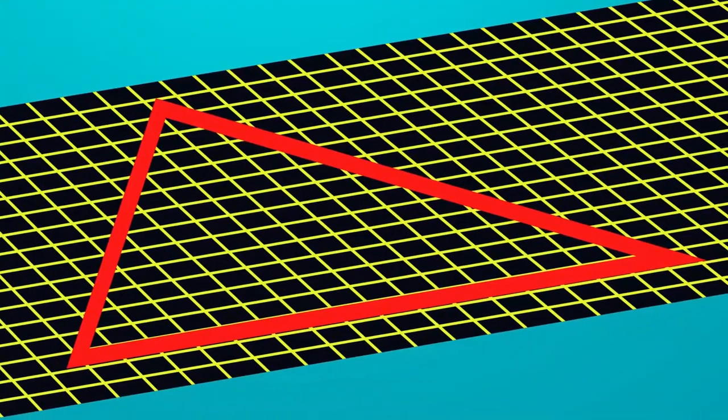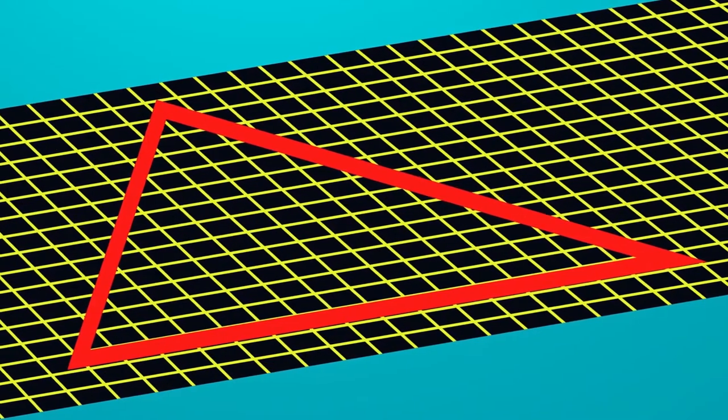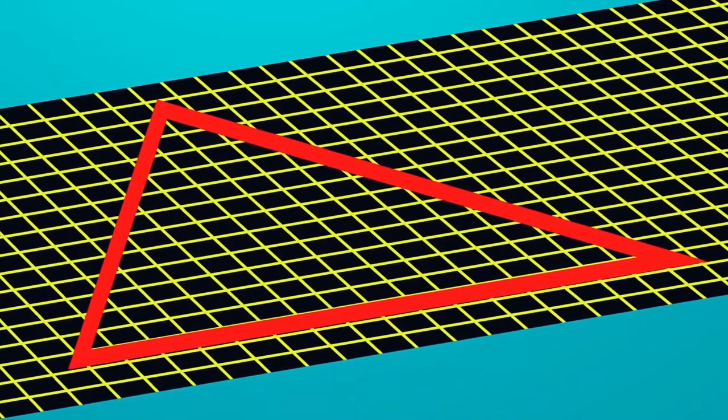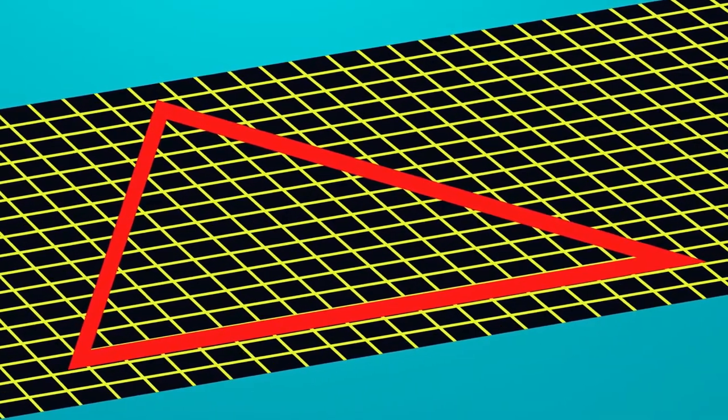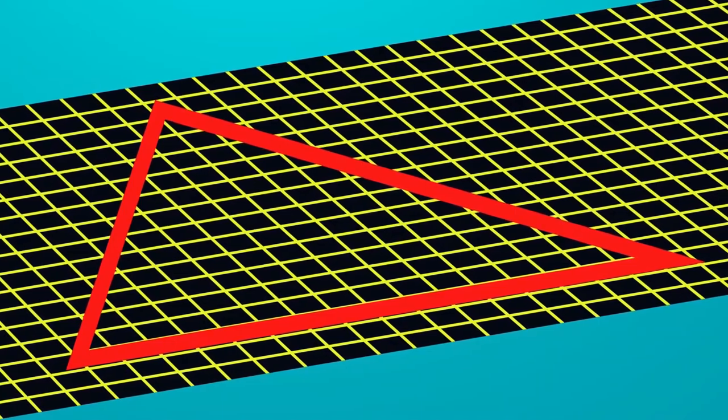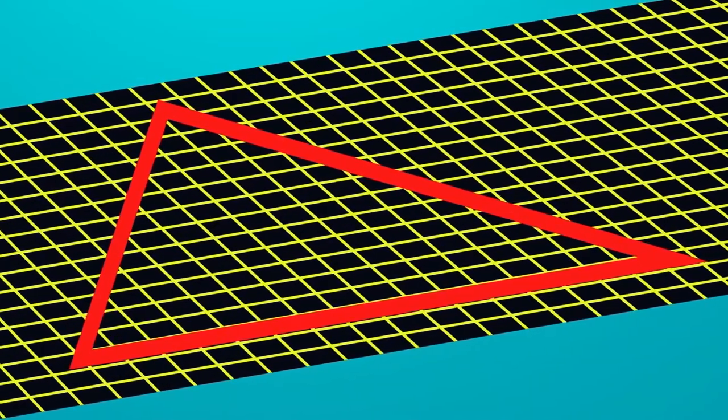And only if there is neither positive nor negative curvature will the sum of the triangle's angles be equal to 180 degrees. Just like in geometry lessons, on a flat sheet of paper. In other words, a flat universe will look like a three-dimensional lattice with zero curvature.